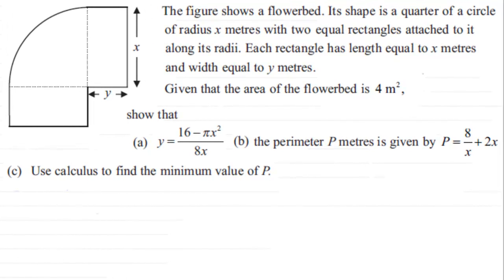Hi, now in this next part of this question we're asked to use calculus to find the minimum value of P. Remember in the previous part of the question we showed that the perimeter P meters of the flowerbed here was given by P equals 8 over x plus 2x.